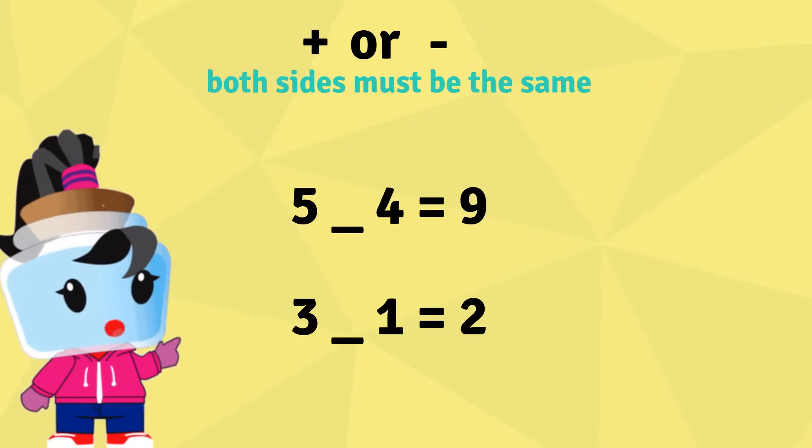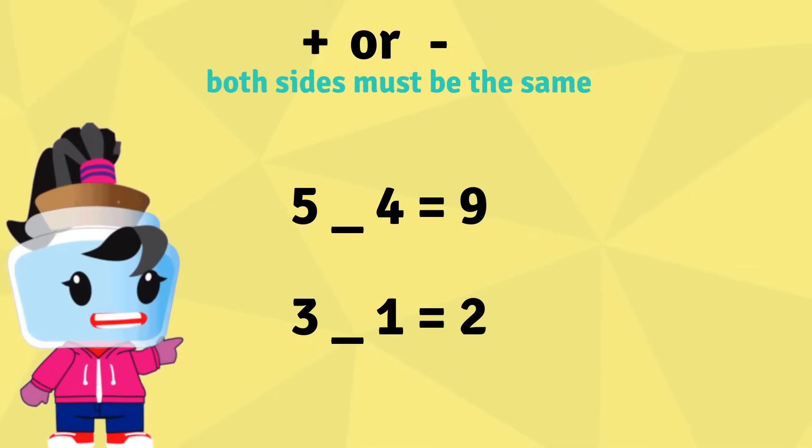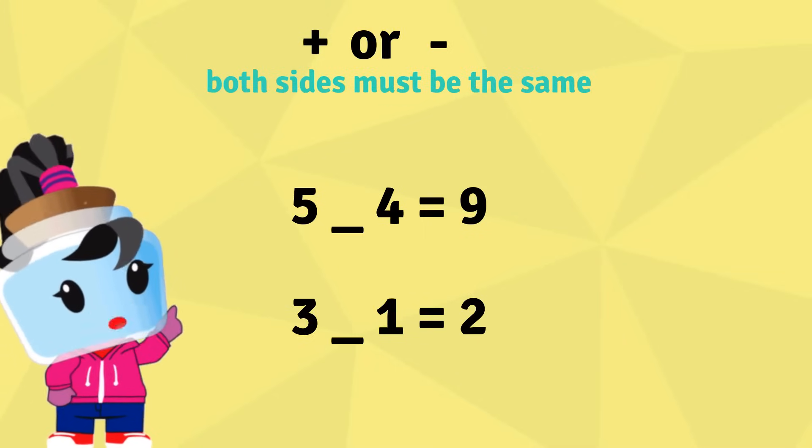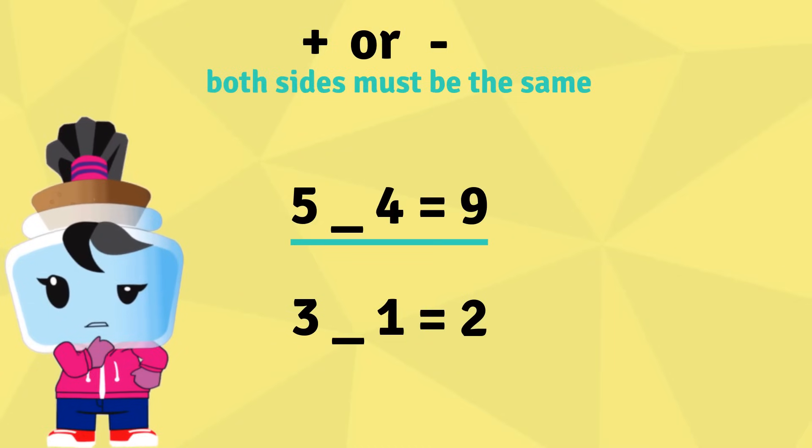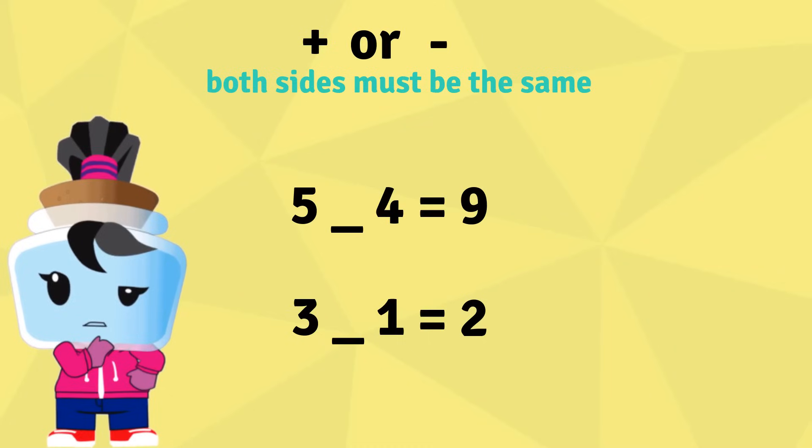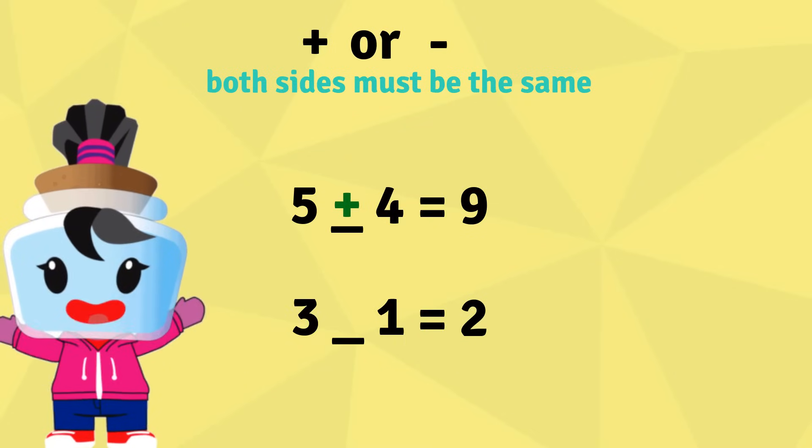Remember, both sides of the equal sign must be the same. Which math symbol would you use to fill in the blank? Using plus, we get 5 plus 4 equals 9. Let's see, 5 plus 4 equals 9. This makes the left side equal to the right side, so plus is the correct answer.